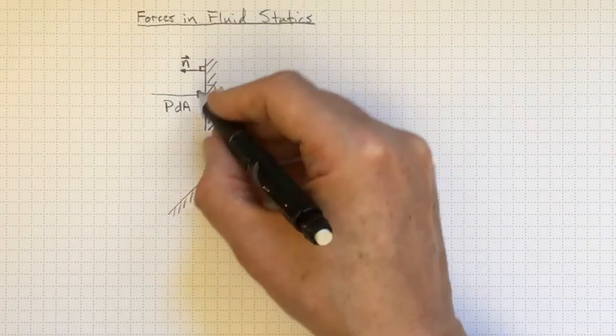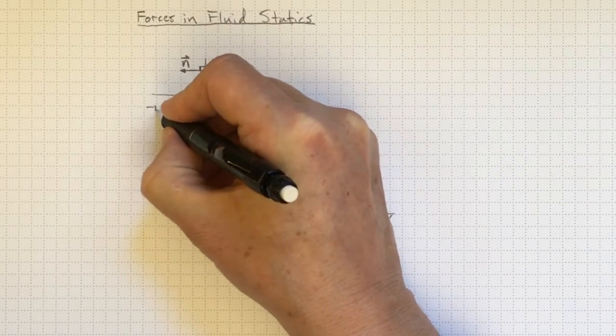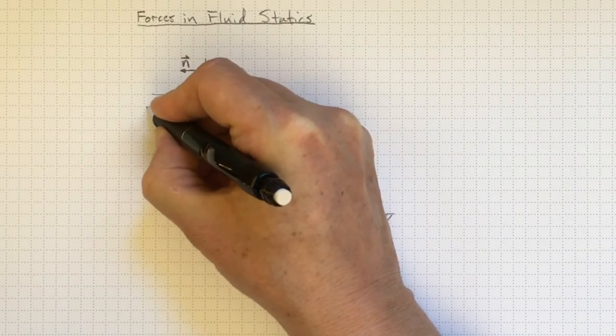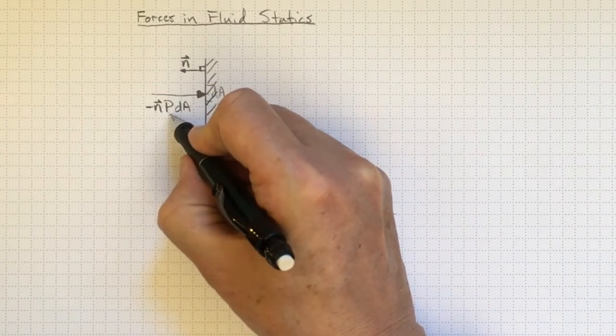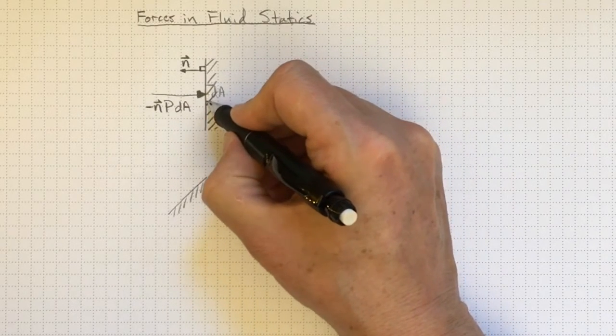And we can define that unit normal vector for every surface as pointing outwards from the surface. In that case, the force from the pressure is going to be negative. It's in the opposite direction of that unit normal pointing outwards from the surface. Negative n times the pressure times the small amount of area that it's acting over.